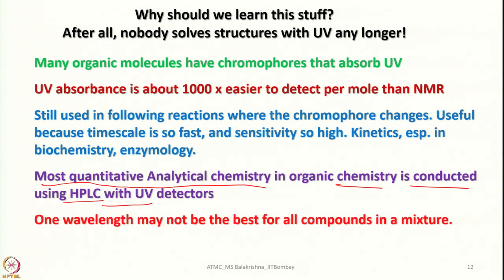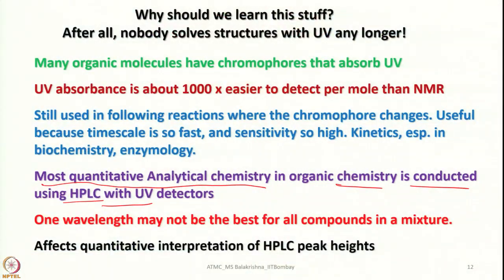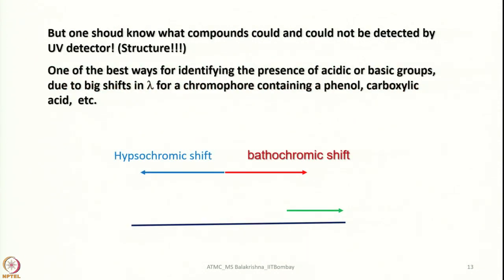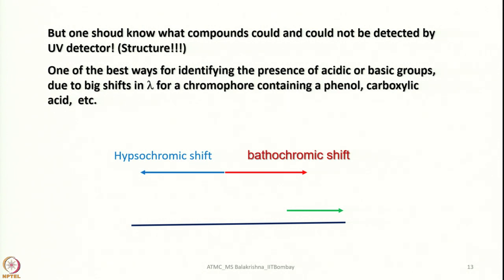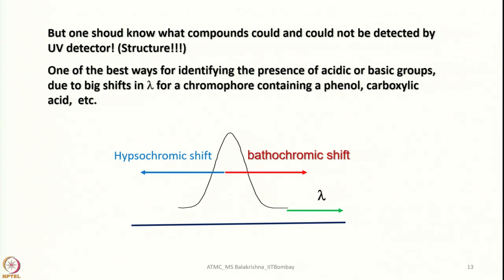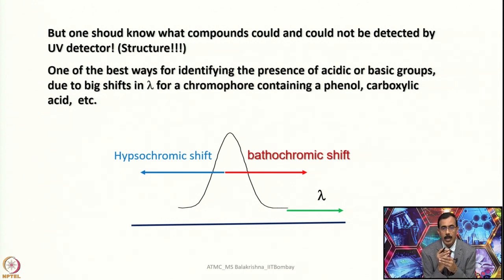In HPLC, one wavelength may not be the best for all compounds in a mixture; we must use a range of wavelengths to cover all absorptions or transitions that occur. This affects quantitative interpretation of HPLC peak heights, and one should know which compounds can and cannot be detected by a UV detector. UV is also one of the best ways to identify acidic or basic groups due to large shifts in lambda maximum for chromophores containing a phenol or carboxylic acid — a blue shift (hypsochromic) or red shift (bathochromic).